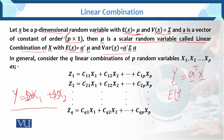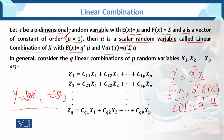Taking expectation on both sides: the expected value of y equals a-transpose times the expected value of x. We know that the expected value of x equals mu, so the expected value of y equals a-transpose mu. Similarly, the variance of x equals a-transpose sigma a.